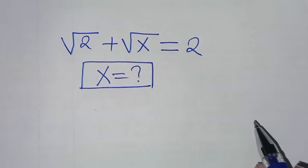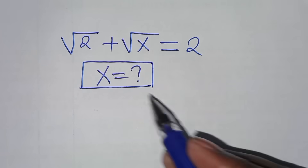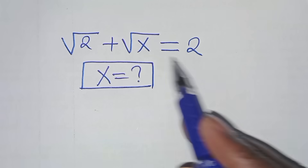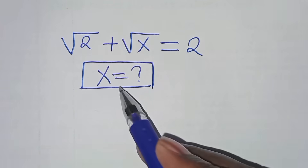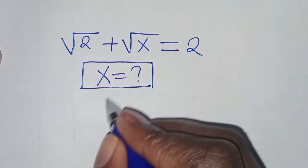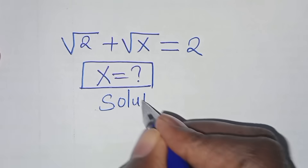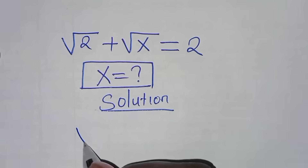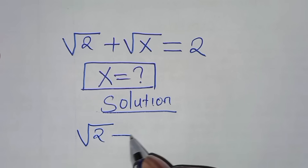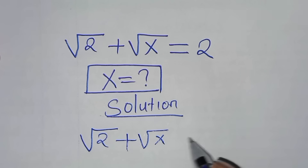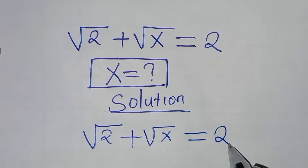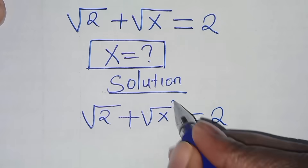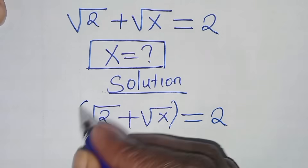Hello everyone, you are welcome to solve this nice algebra problem: the square root of 2 plus square root of x equals 2. So what is the value of x? The first thing to do here is to square both sides.